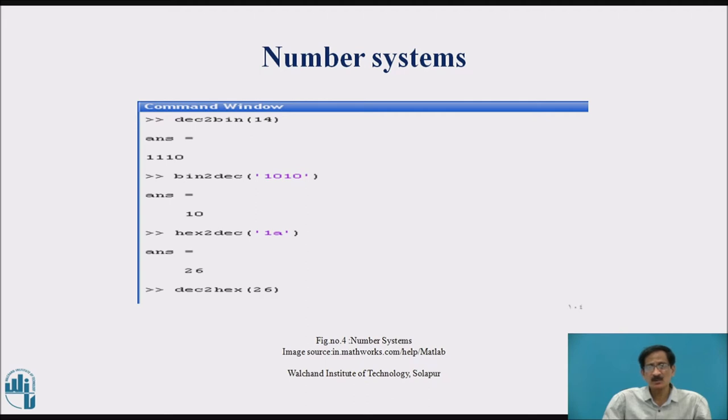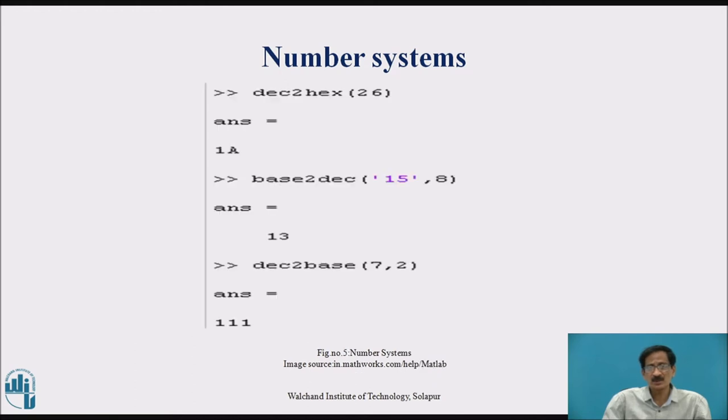Here is the first example: dec2bin(14) converts decimal 14 into binary equivalent 1110. bin2dec('1010') gives decimal 10. hex2dec('1A') gives decimal 26. dec2hex(26) gives 1A.